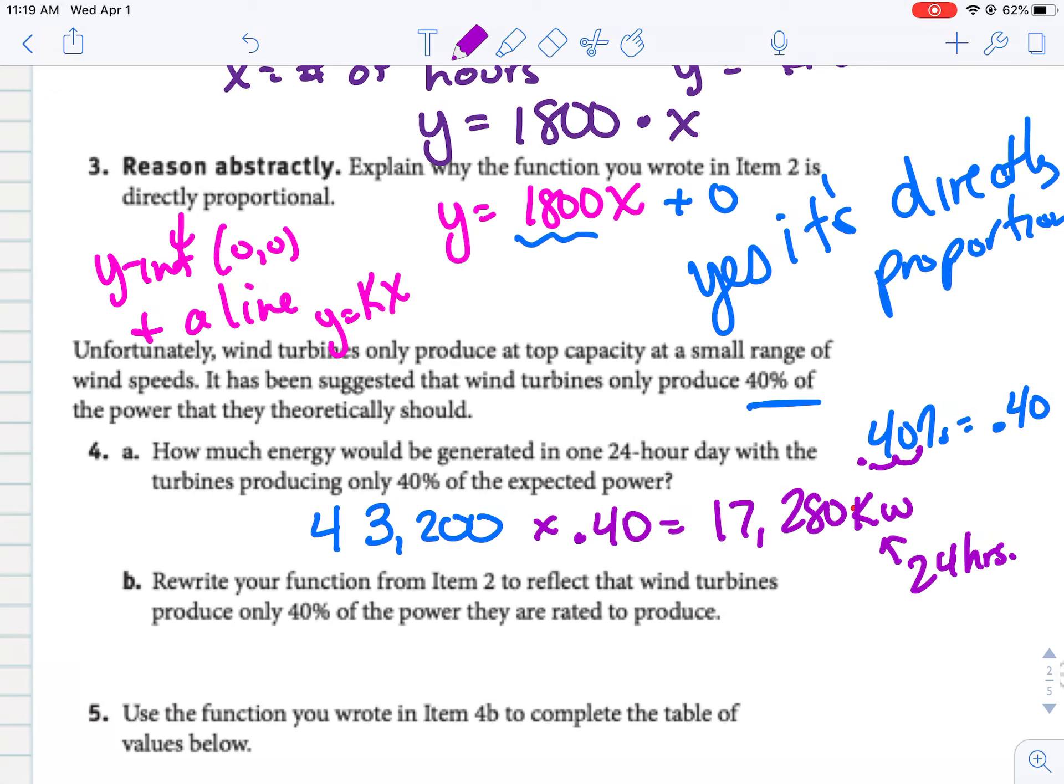So what they want us to do is rewrite our function. So back in number two, that was per hour. What we're going to do is say, it's going to make not 1,800, we're going to take that 1,800 and multiply by 0.40, which gives us 720. So it makes 720 kilowatts per hour. We know it's going to be less than half. Half of that 1,800 would be about 900, 40% is 720.